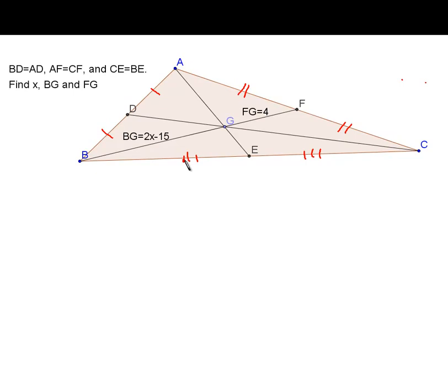That would mean then that these segments connecting vertex A to midpoint E, AE, is a median. Also, connecting vertex B to midpoint F makes BF a median. And then segment CD from vertex C to midpoint D, that's a median. G is the midpoint of the medians, so that makes G a centroid.